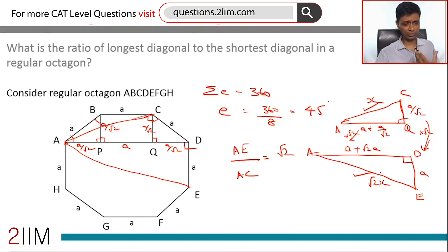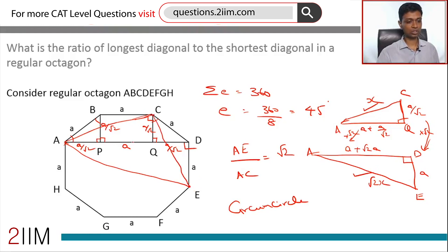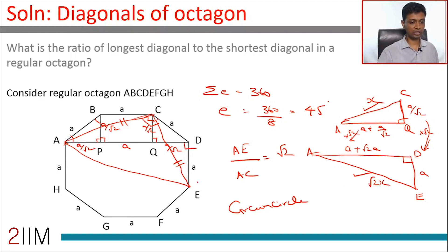A third approach uses the circumcircle — a circle passing through all eight vertices of the regular octagon. The diagonal AE, being the longest chord, is the diameter of this circle. Since AE is the diameter, the inscribed angle ACE must be 90 degrees. Also, AC equals CE by symmetry. So triangle ACE is an isosceles right triangle with sides in ratio 1:1:√2, giving AE/AC = √2.